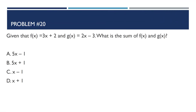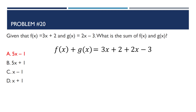Problem number 20: Given that f(x) = 3x + 2 and g(x) = 2x − 3, what is the sum of f(x) and g(x)? The answer is 5x − 1. We add the two functions: f(x) + g(x) = (3x + 2) + (2x − 3). Combining like terms: 3x + 2x = 5x, and 2 + (−3) = −1. So the answer is 5x − 1.